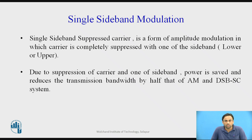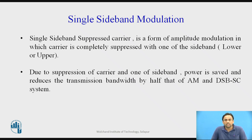The advantages of SSB: due to the suppression of the carrier and one sideband, power is saved and transmission bandwidth is reduced by half compared to AM and DSB-SC systems. As we know, the bandwidth required to transmit an AM signal is 2fm, and the same applies for DSB-SC. But in SSB, bandwidth reduces to only fm — half of that.